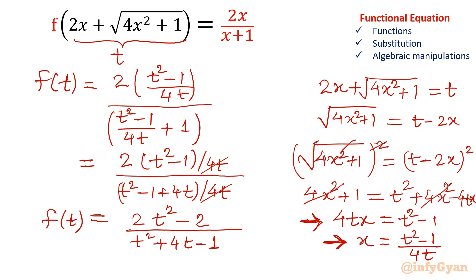Now I will swap, I will substitute x in place of t. So I will write, in place of t I am writing x. So fx will be equal to 2x square minus 2 in the numerator. And in the denominator it will come out x square plus 4x minus 1. This is the way we can find out fx.